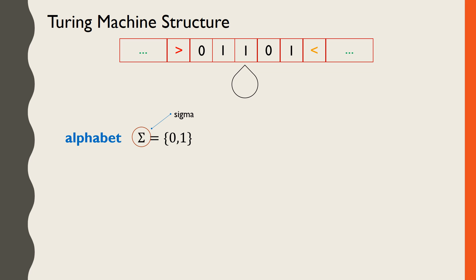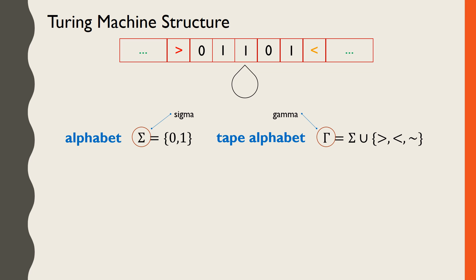Our example machine in this lesson will use the characters 0 and 1. 0 and 1, then, are characters that are allowed to be written on the tape. There's another alphabet Turing machines use, which we call the tape alphabet, and represent with capital gamma. It contains the 0 and 1 from sigma, as well as a few special symbols used in computations. These symbols mark the start position, the end position, and a blank or unused cell.